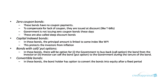By the way, the government is not issuing zero coupon bonds these days. You may also hear the term deep discount bonds, which is essentially the same as zero coupon bonds. Then there are bonds called capital indexed bonds, where the principal amount is linked to an index like the Wholesale Price Index. This protects investors from inflation.